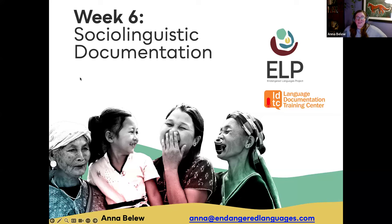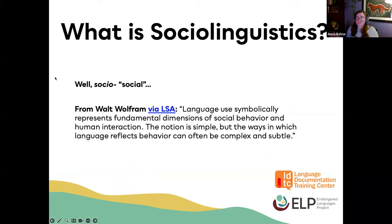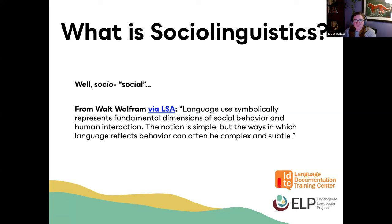Let's just dive right in with a big question, because we're starting with a complex term already. What actually is sociolinguistics and what do we mean when we say sociolinguistic documentation? Let's try and pull apart this long word. Let's start with 'socio,' which is basically the root word for anything social, anything that has to do with society. One of the very most preeminent sociolinguists, Walt Wolfram, defines it this way: language use symbolically represents fundamental dimensions of social behavior and human interaction. The notion is simple, but the ways in which language reflects behaviors can often be complex.